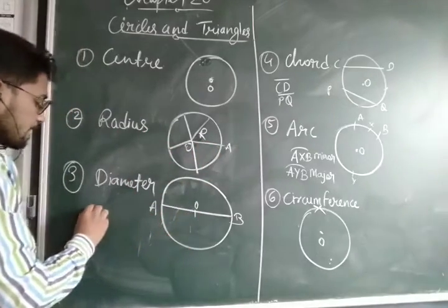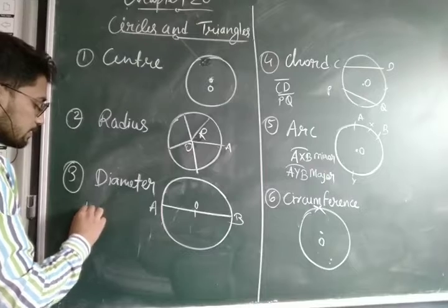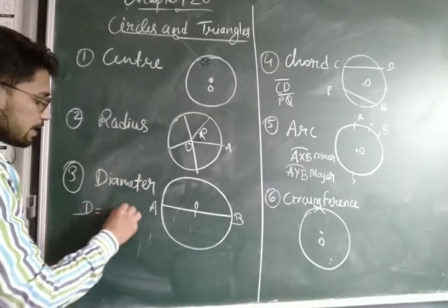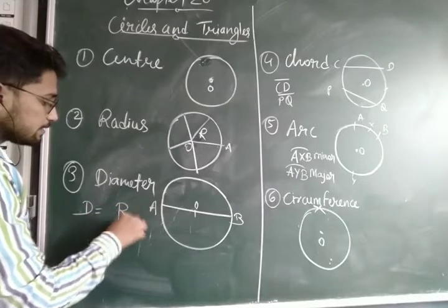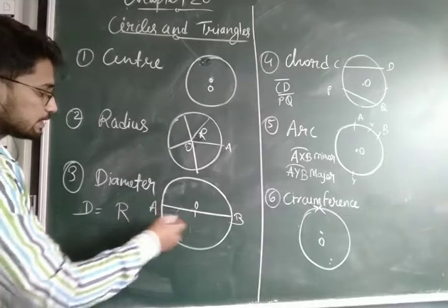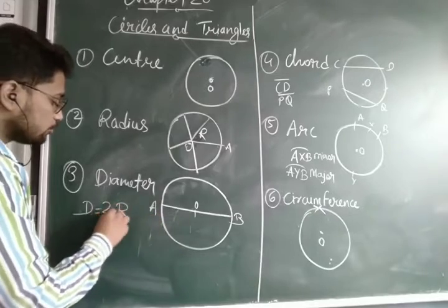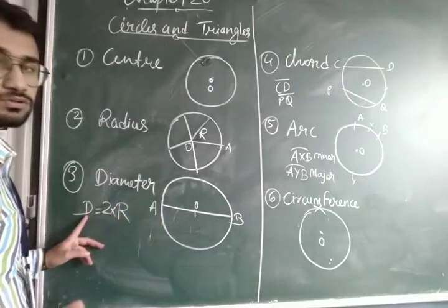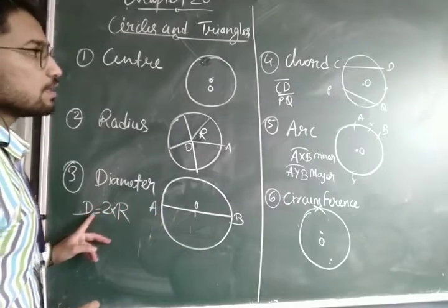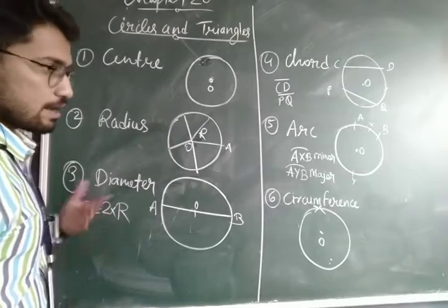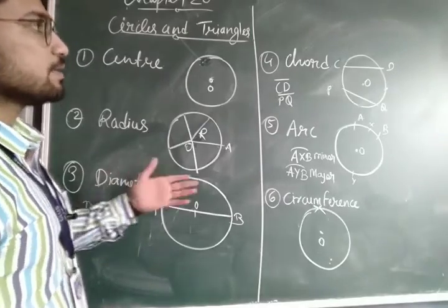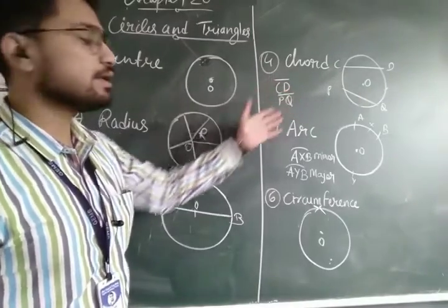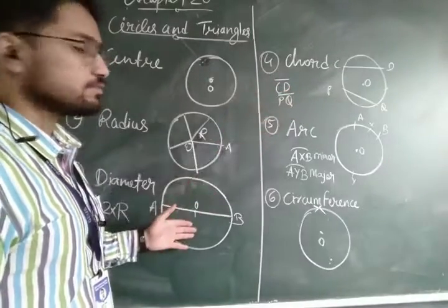If I write D for diameter and R for radius, then 2 × R is equal to diameter. Later I will explain what is chord and I will relate this chord with the diameter.